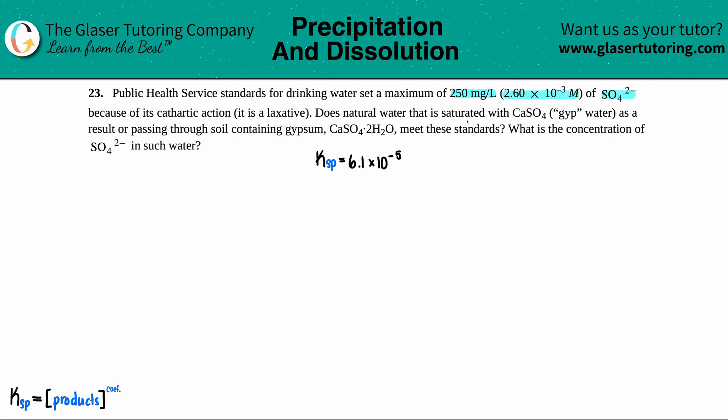Does natural water that is saturated with calcium sulfate, CaSO4, which is called gyp water, as a result of passing through soil containing gypsum, which is CaSO4·2H2O, does this meet these standards? And then what is the concentration of the SO4 2 minus in such water?